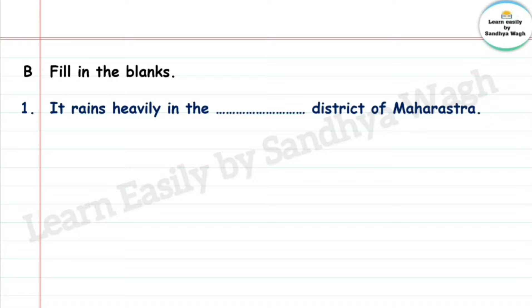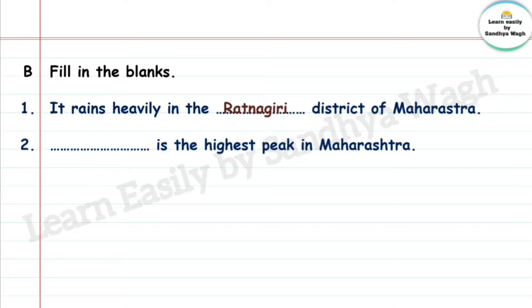Fill in the blanks: 1. It rains heavily in the Ratnagiri district of Maharashtra. 2. Kalsubai is the highest peak in Maharashtra.